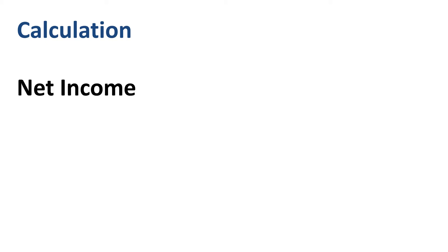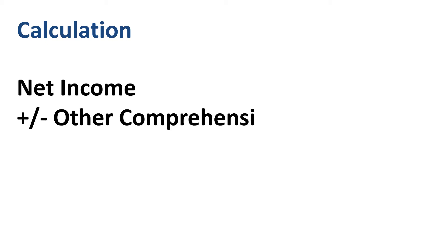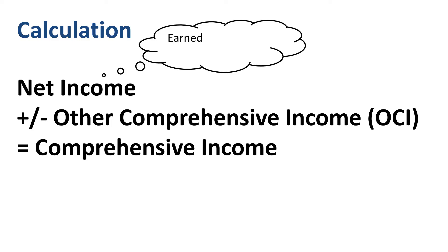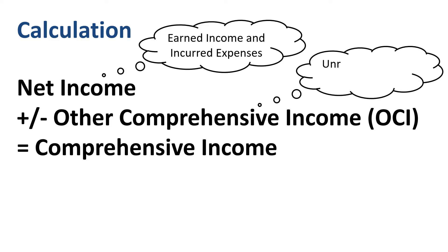Net income plus or minus other comprehensive income equals comprehensive income. Net income represents earned income and incurred expenses. Other comprehensive income represents unrealized gains and losses that have an effect on balance sheet amounts, including the equity account, but bypass the income statement.